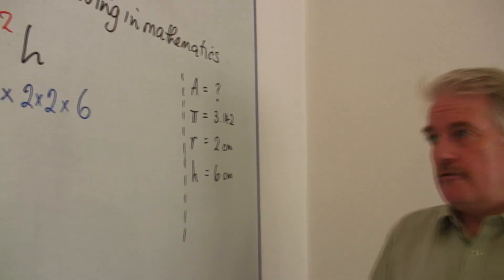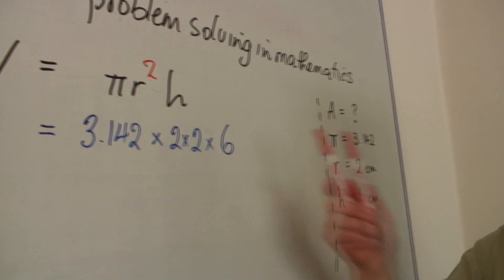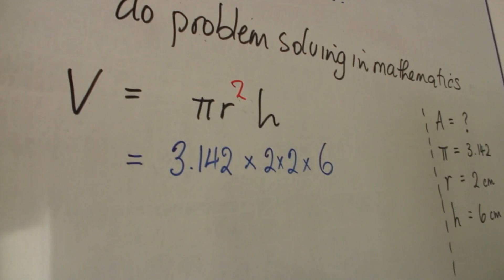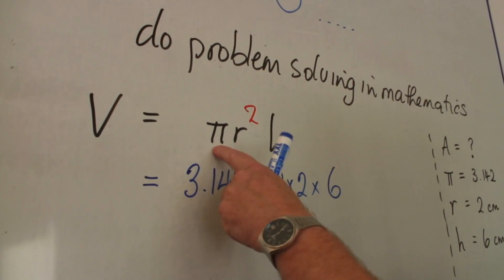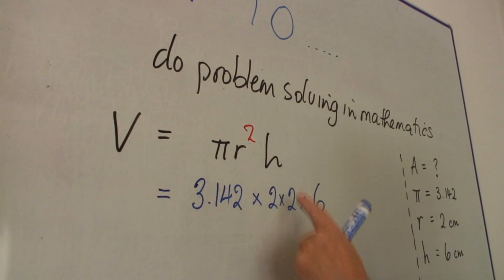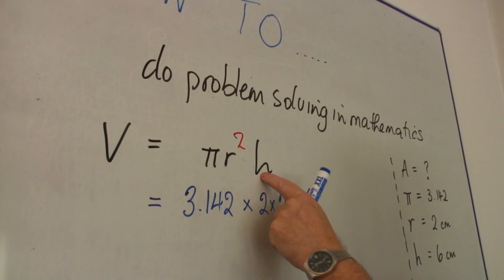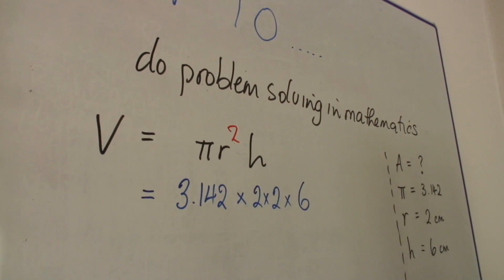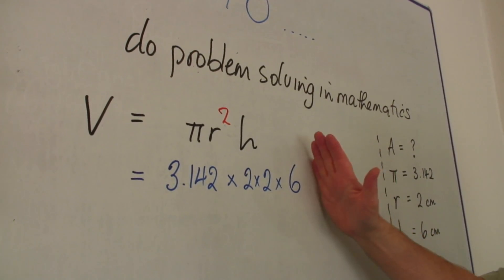At this stage, now is the time to just double check. Have I got pi? Yes. Have I got r? Yes. Squared? Yes. I've got 2. Have I got h? Yes. It's all there. At least I know to this stage, I'm right.